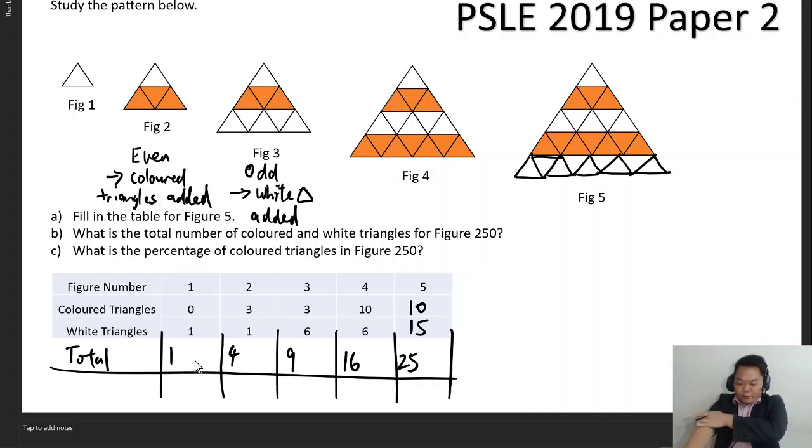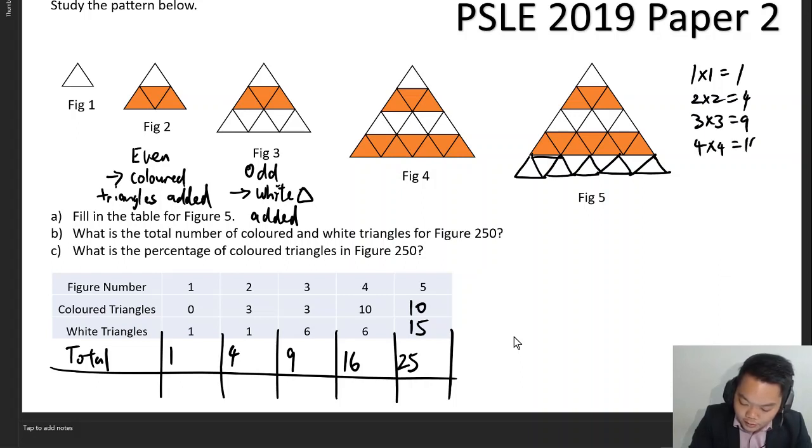If you have been following my Facebook live sessions during the sessions on spatial visualization and looking for patterns, I often ask students to memorize the square numbers: one times one equals to one, two times two equals to four, three times three equals to nine, four times four equals to sixteen, and so on, because doing this will help you to recognize patterns more easily.